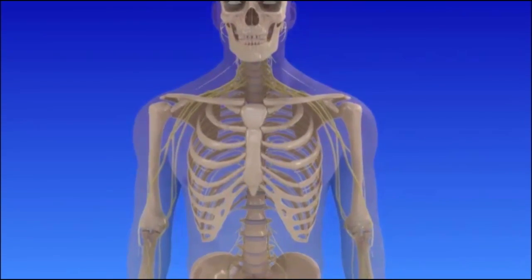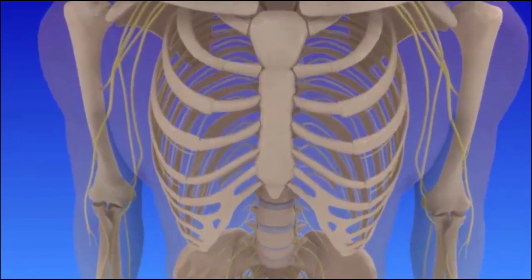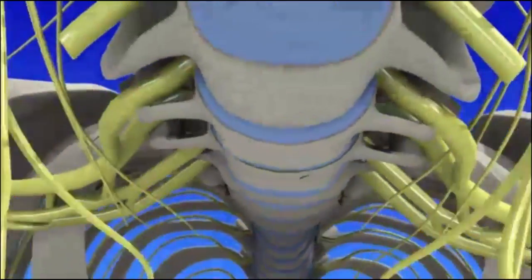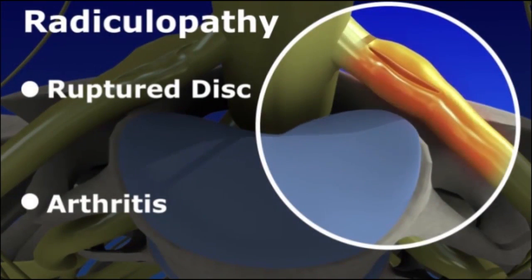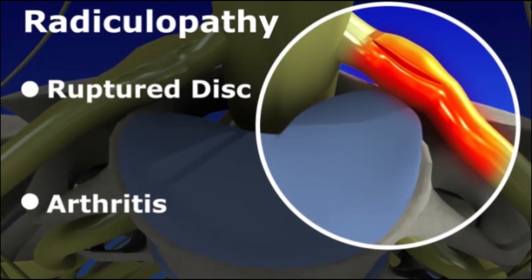Cervical transforaminal steroid injections are used to treat pain resulting from pinched nerves in the neck. Ruptured discs and arthritic changes can contribute to pinched or compressed nerves, causing radiating arm pain known as radiculopathy.